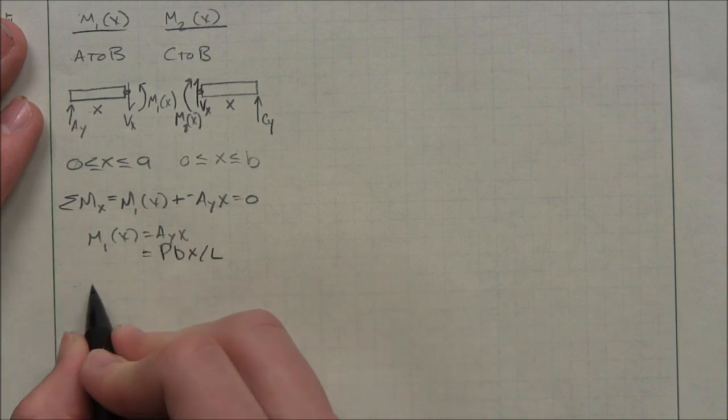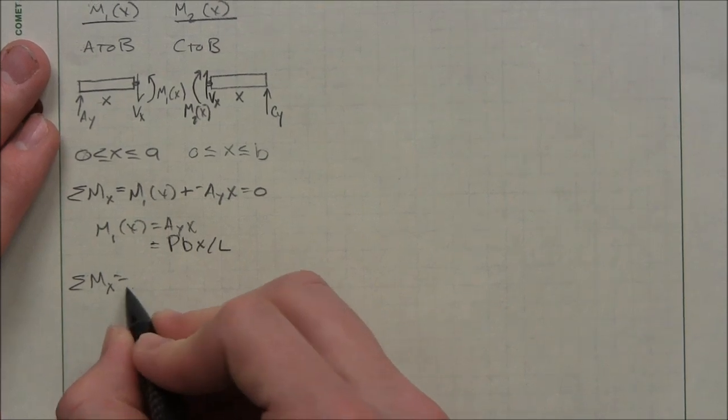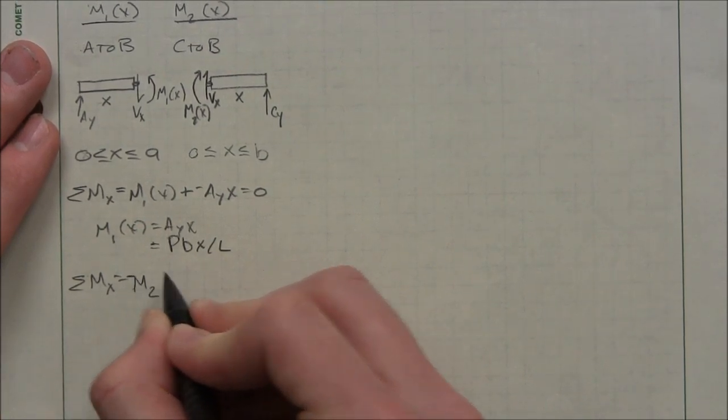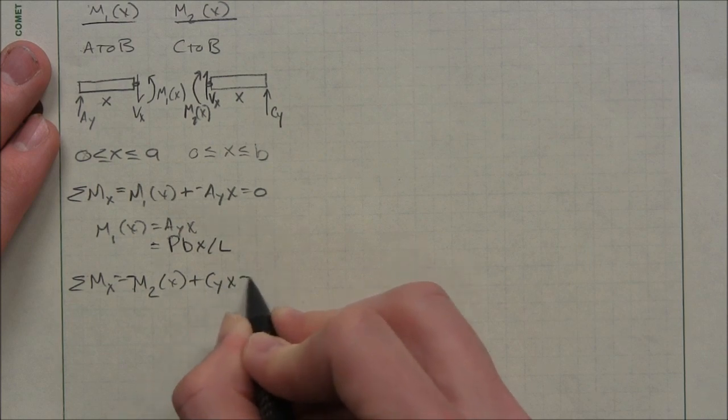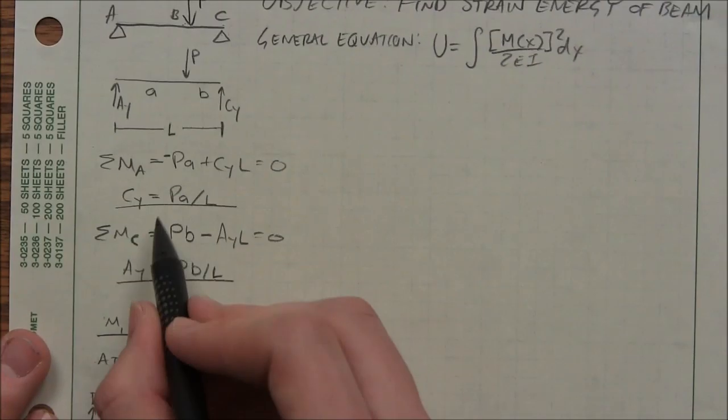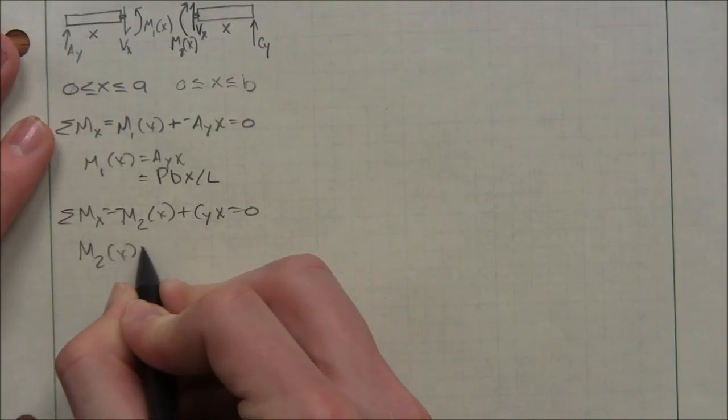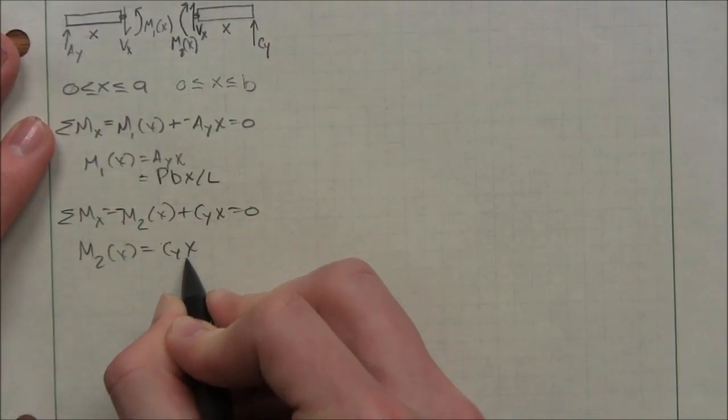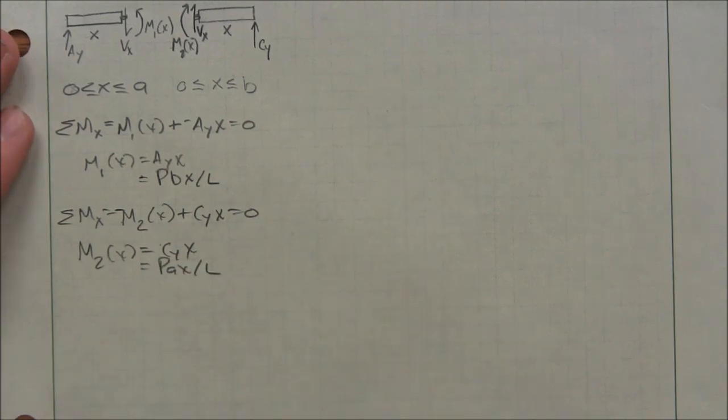Same thing for our M2 equation. I'm going to sum the moments. That's actually a negative M2 of X plus CYX equals zero. And CY equals PA over L. So M2X equals CYX, which equals PAX over L.